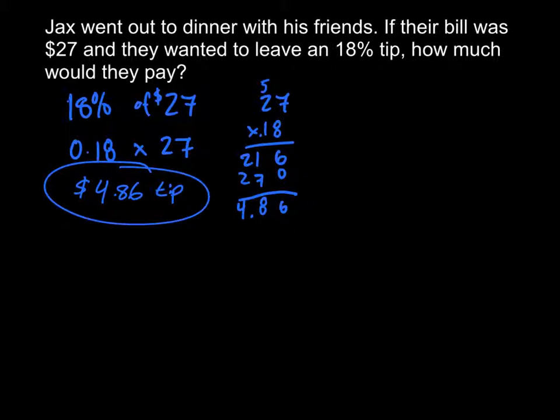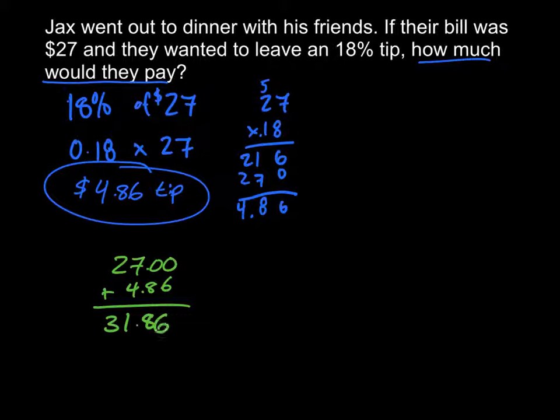And this says, how much would they pay? It doesn't ask how much is the tip, but how much would they pay? So then what we need to do is we need to take the tip amount and add that to the total amount for the dinner, which is $27, adding $4.86, which gives you $31.86 total.